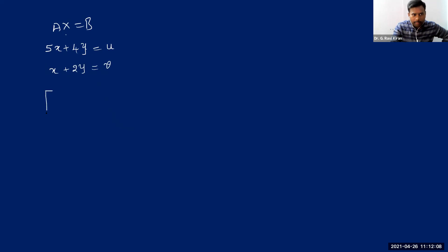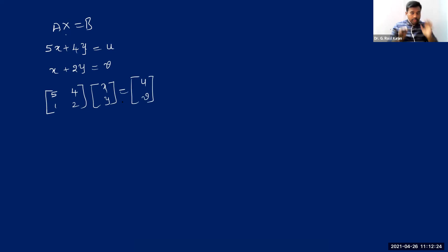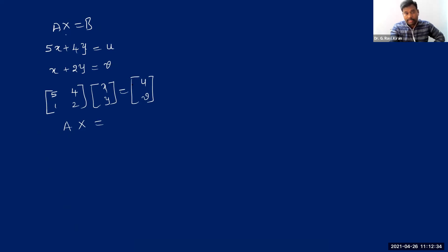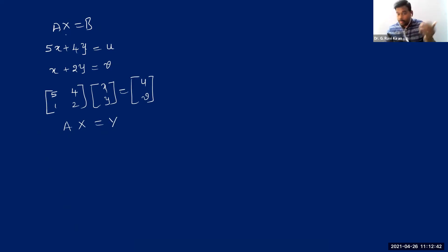If I write this in matrix form, the coefficient matrix is [5, 4; 1, 2] and the solution vector is [x, y], giving [u, v] on the other side. For convenience, I'm calling the coefficient matrix capital A. I'm defining y as the output vector and x as the input vector — a different way of using the same representation from before. I can write it as y equals Ax, which I call a transformation, in fact a linear transformation.